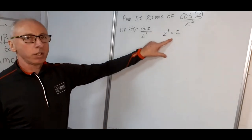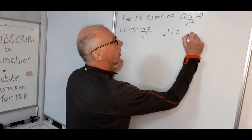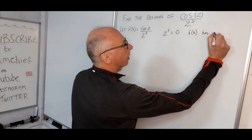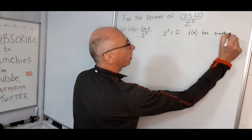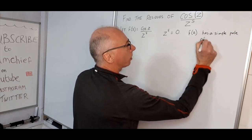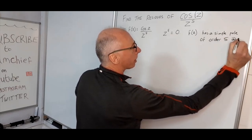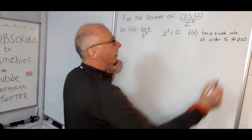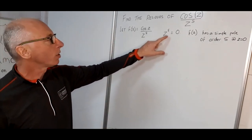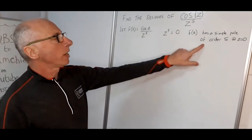When we have this situation in the denominator, we can say that f(z) has a pole of order 5 at z equals zero. Plugging in z equals zero, we get 5 separate solutions.